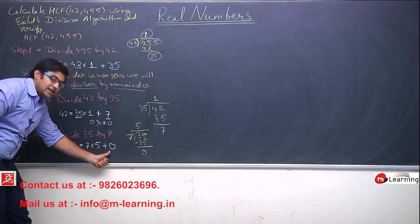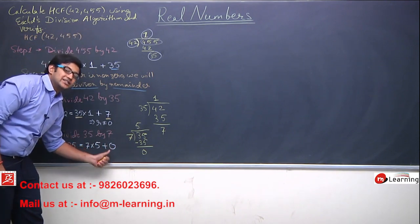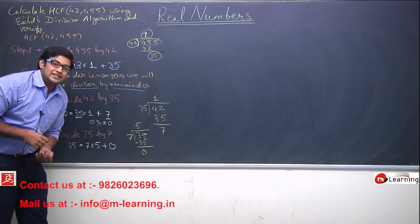So what you can see here? Remainder is equals to 0. In this case, the remainder is 0. Then what will be the HCF?